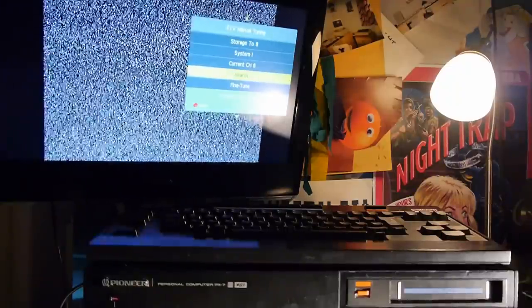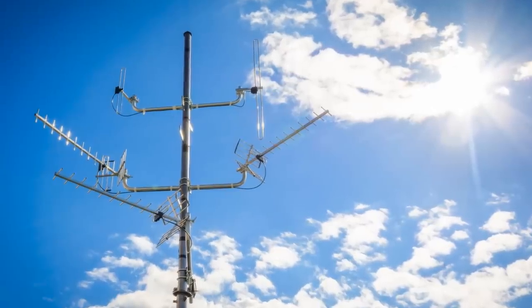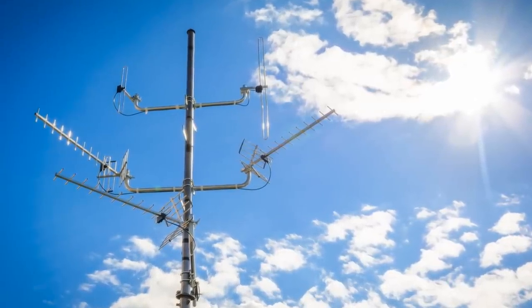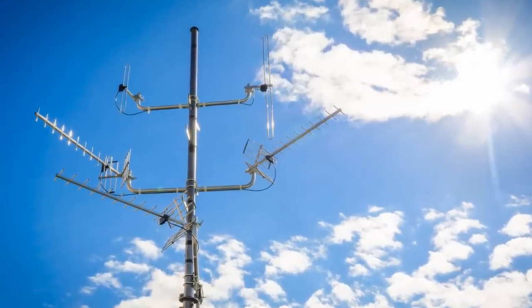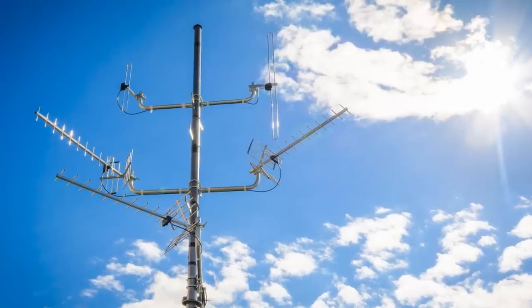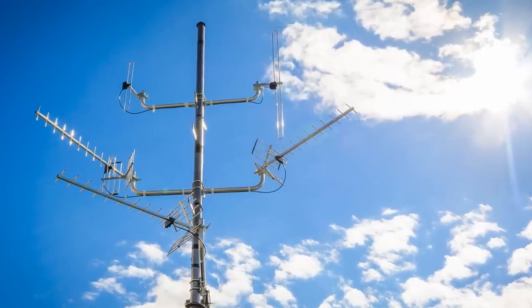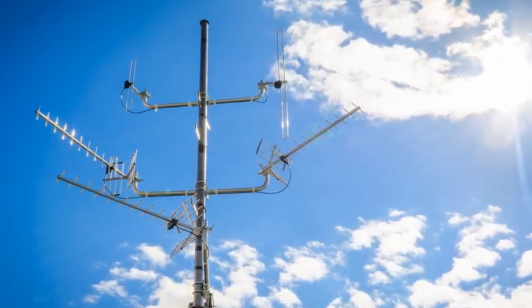Why do we even get this snowy static fuzz? Well, analogue televisions will try to amplify any signals they receive, so if there isn't a strong enough signal from a TV mast or a modulator being sent into the TV's receiver at the frequency it's currently tuned to, it will instead amplify whatever electromagnetic signals it picks up.